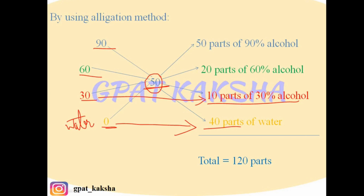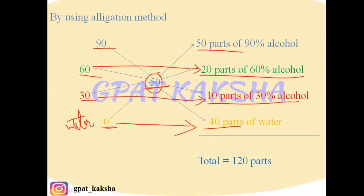Now subtracting 30 from 50 gives 20 parts of 60% alcohol, because this value is obtained in front of 60%, so 60% alcohol is required in 20 parts. Finally, subtracting 0 from 50 gives 50 parts of 90% alcohol, because this quantity is obtained in front of 90%. So the amount of 90% alcohol required to produce 50% alcohol is 50 parts.